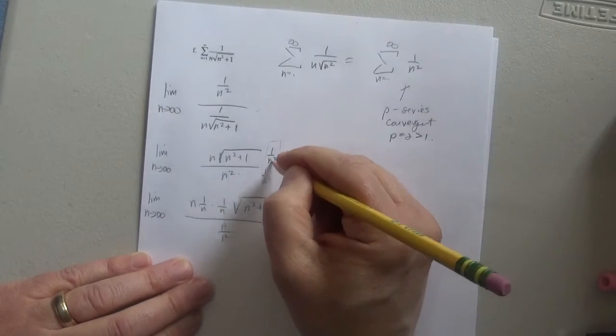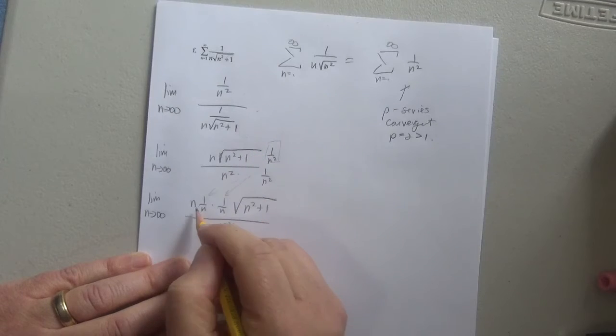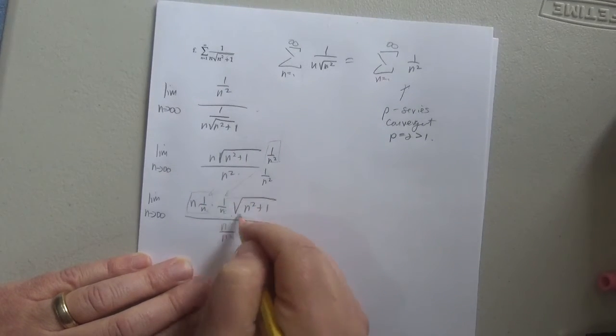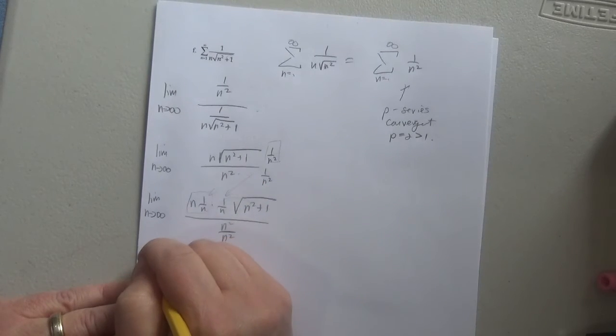So I took this term here and broke it up into two pieces, right? This thing here is just going to turn to 1. This I have to slide in and square it, right? Because that's how you put something back inside of a radical.